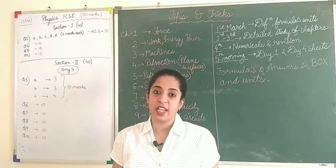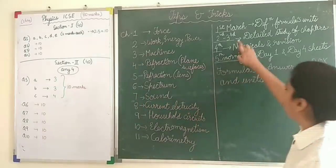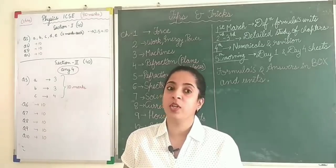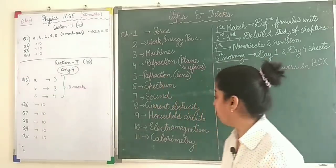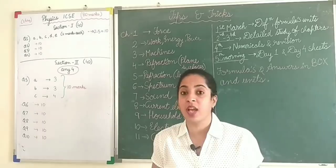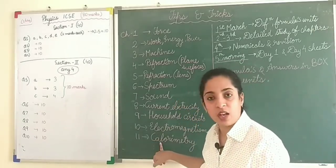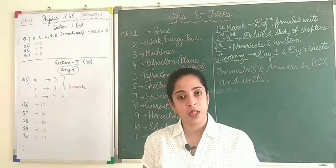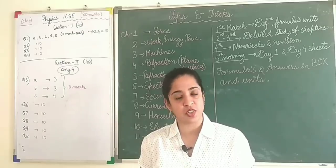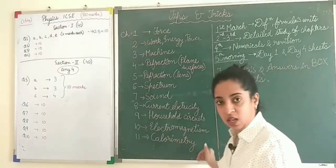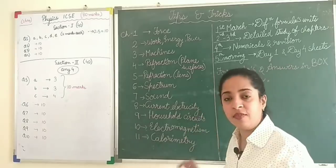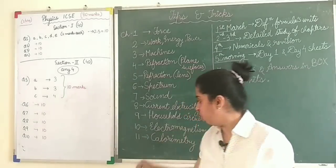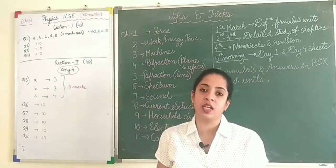This way you will prepare charts for each and every chapter on the 1st itself. On 2nd and 3rd of March you will do the detailed study of all chapters. In the description box I have given links to all the important topics — for example, how to solve numericals of calorimetry easily, and how to make ray diagrams from the refraction chapter. Divide the chapters across the two days and finish all 11 chapters, reading word by word from your textbook.